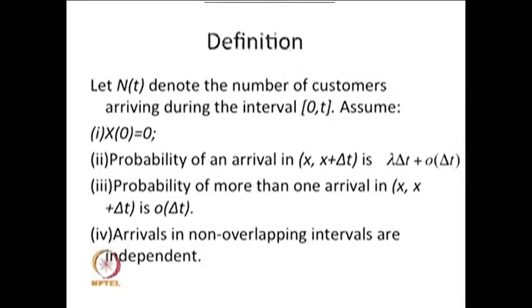Now I will give the definition of a Poisson process and how one can derive it. The Poisson process is a stochastic process with some conditions. Let me start with the random variable N(t), which denotes the number of customers arriving during the interval 0 to time t — that is, how many arrivals take place in the interval 0 to t. For fixed t, N(t) is a random variable, and over time, the collection N(t) is a stochastic process. I am making four assumptions with which I will conclude the distribution of N(t).